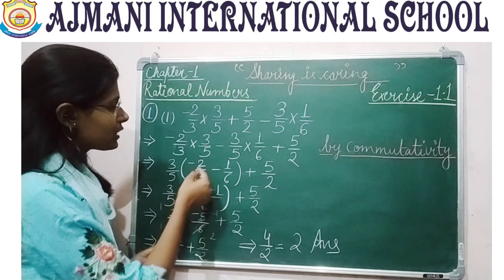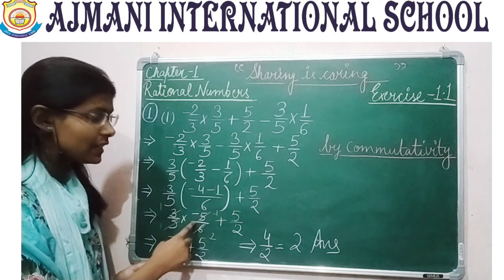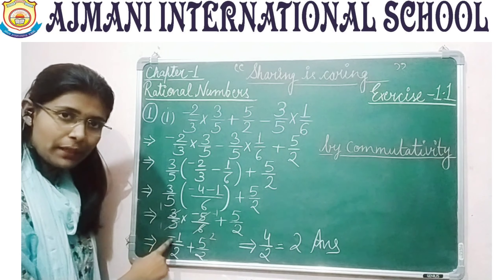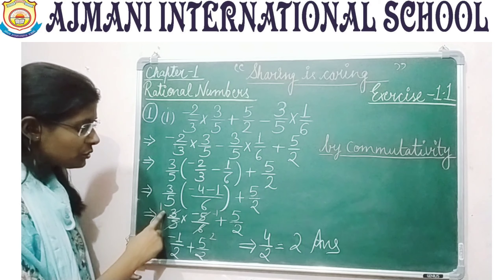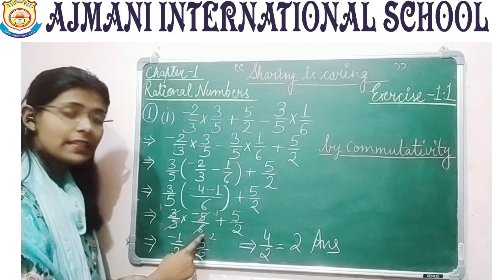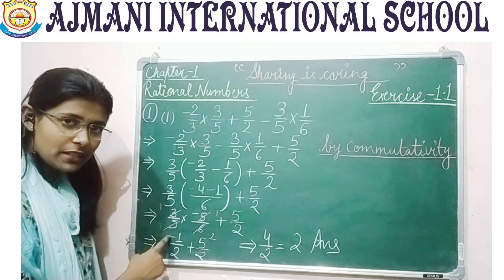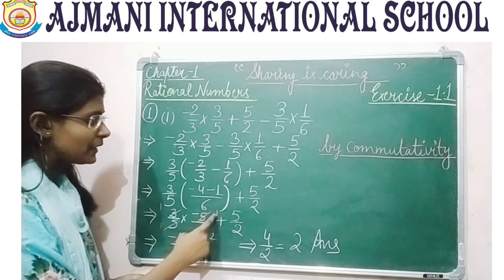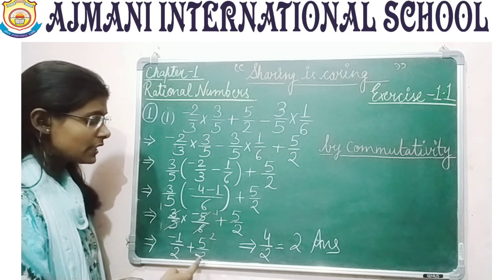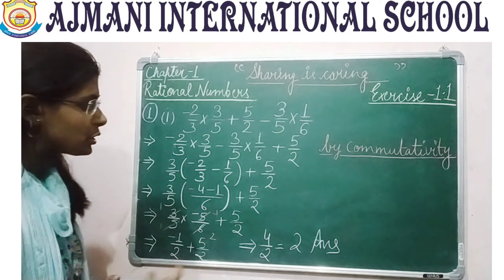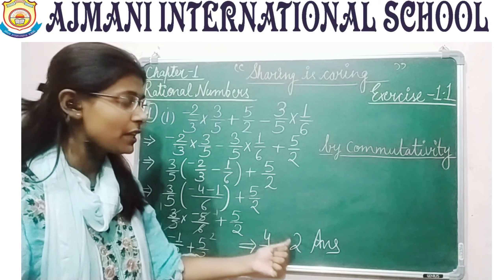The LCM is 6, and minus 2 by 3 becomes minus 4 by 6, so minus 4 minus 1 gives minus 5 by 6. So we have 3 by 5 multiplied by minus 5 by 6, plus 5 by 2. Cancelling the 3 from the numerator with the 6 in the denominator and the 5 with the denominator, we get minus 1 by 2. With the same denominator, minus 1 plus 5 equals 4 divided by 2, giving a final answer of plus 2.